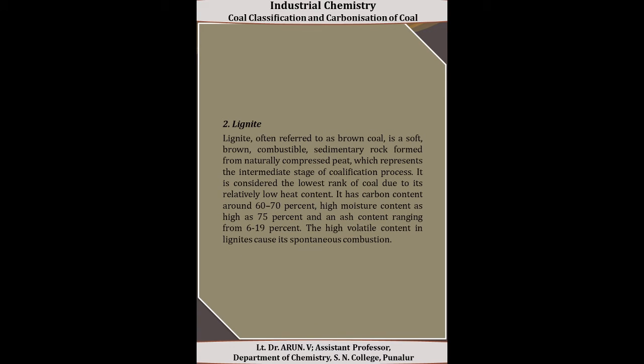The second type is lignite, often referred to as brown coal. It is a soft, brown, combustible sedimentary rock formed from naturally compressed peat, representing an intermediate stage of coalification. It is considered the lowest rank of coal due to its relatively low heat content. It has a carbon content of around 60 to 70%, a high moisture content of around 75%, and an ash content ranging from 6 to 90%. The high volatile content in lignite causes its spontaneous combustion.